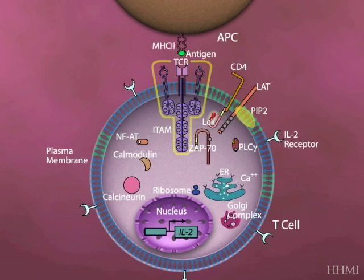This is the T cell. This is the antigen presenting cell. This is the MHC complex. This is the T cell receptor itself. Here's CD4 and LCK, ZAP70 we talked about. Here's this linker molecule, LAT, and this is the phospholipase C gamma enzyme.